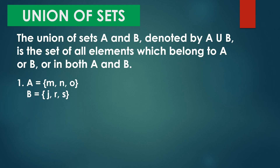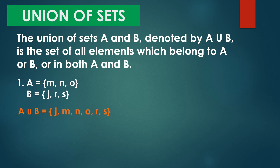So sabi doon natin ang union of sets, pagsamahin natin yung elements ni set A at set B. So ang sagot natin ay A union B is equal to {J, M, N, O, R, S}.